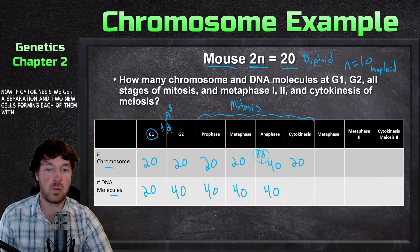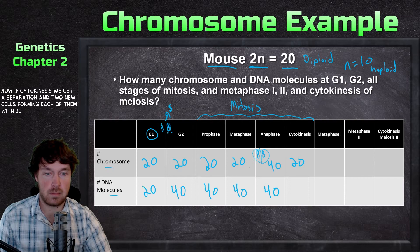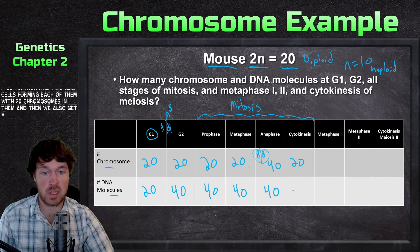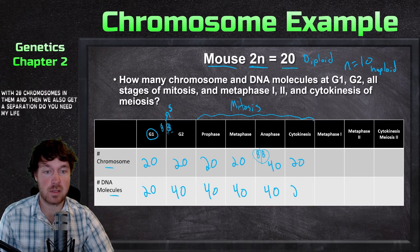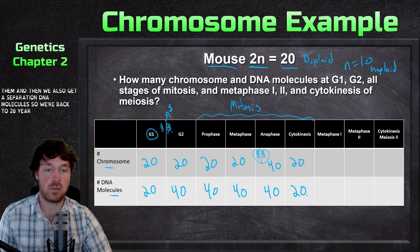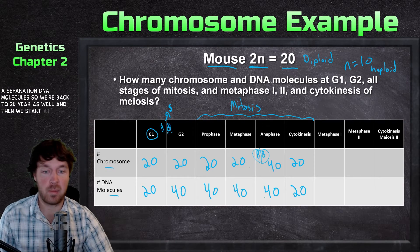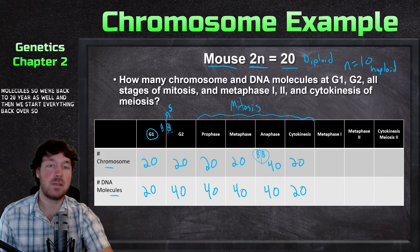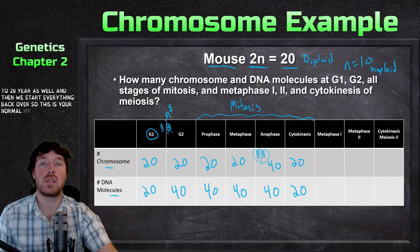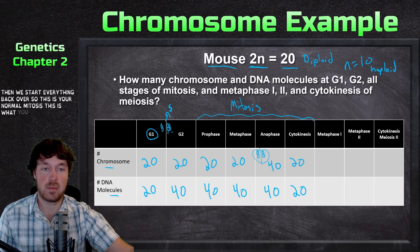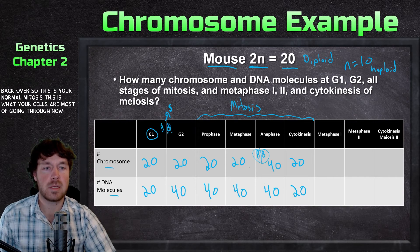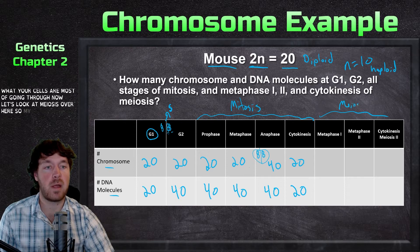At cytokinesis we get a separation and two new cells forming, each with 20 chromosomes, and we also get a separation of DNA molecules, so we're back to 20 as well. Then we start everything back over. This is normal mitosis — what your cells are mostly going through. Now let's look at meiosis.